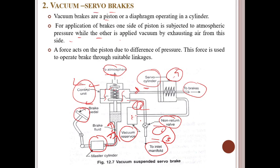The more commonly used arrangement in modern automobiles is to have a servo cylinder called a vacuum-operated booster, operated directly by the brake pedal through a lever linkage. The booster unit uses a push rod to operate the master cylinder, which is placed in front of the booster unit. This completes the explanation of the vacuum servo brake system.